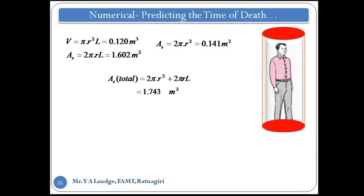Now to find the total area: total area equals the lateral surface area plus the area of the two circular faces, that is 2 pi r L plus 2 pi r squared. Adding these values gives a total area of 1.743 meter square.